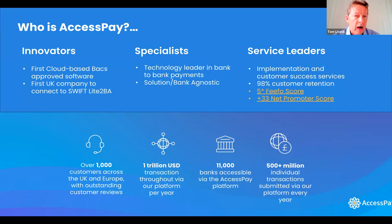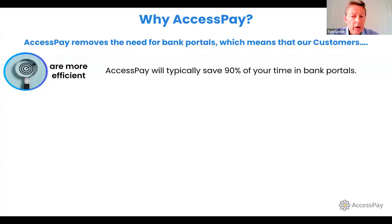AccessPay as a SaaS company is very focused on customer satisfaction. They publish their customer satisfaction scores — a customer onboarding score of 5.0 out of 5 and 5 stars for excellence. For in-life service, they use Net Promoter and have a score of plus 33, which is between very good and excellent. This is backed by a customer retention rate of over 98%, with over 1,000 customers ranging from SMEs to large corporates. The platform processes over 1 trillion US dollars per year, made up of about 500 million individual transactions.